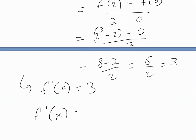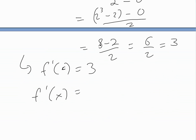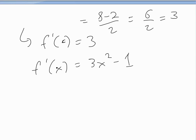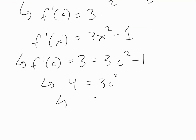Now we take the derivative: f prime of x equals three x squared minus one, using the power rule. We set f prime of c equal to three: so three equals three c squared minus one. Solving for c: three plus one gives four equals three c squared, so four over three equals c squared.